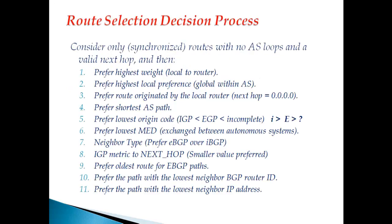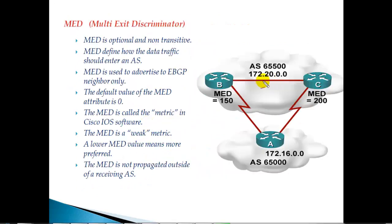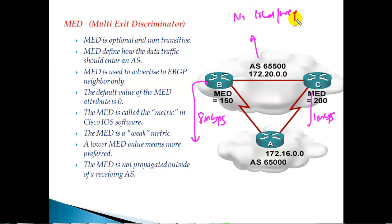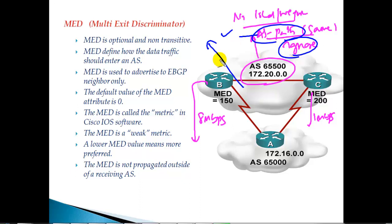Another consideration is the AS path information. AS path is evaluated even before MED in the path selection process. So if we want return traffic to prefer the 8 Mbps link but AS path is favoring the 1 Mbps link, MED alone won't help. We must assume no local preference or weight is applied in the remote AS, and the AS path information should either be the same on both paths, or we can configure the command 'bgp best-path as-path ignore' to ignore AS path comparison and always compare MED when deciding the exit path.